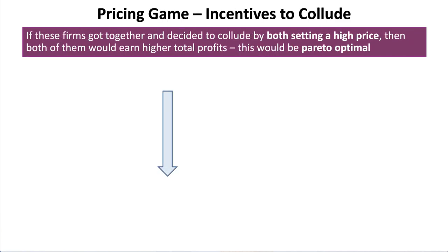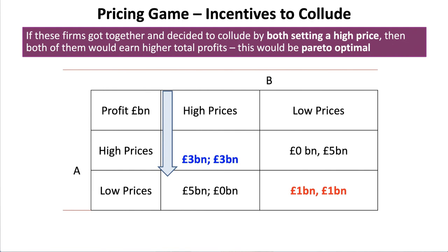If these firms got together and decided to collude by both setting a high price, then both of them would earn higher profits, and this would be Pareto optimal — both receiving three billion pounds each. We can also use this scenario to think about why collusion might break down in an oligopolistic market or in a cartel specifically. The reason it breaks down is there's always the incentive to undercut the other and charge a lower price to earn the higher profit of five billion. This gives us an analytical chain to explain the incentive to collude but also why that collusive agreement might break down.